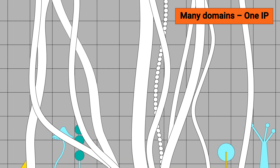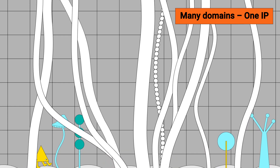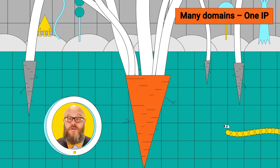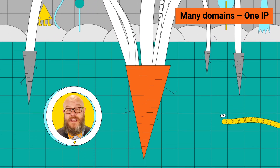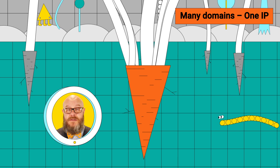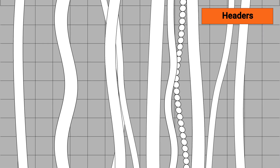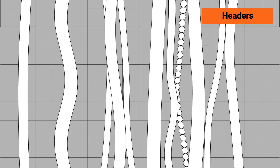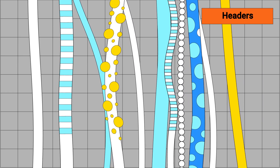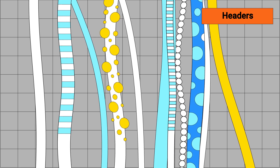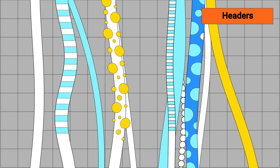Try filtering by IP. Toxic links with different domains can sometimes come from the same IP address. Most likely, the suspicious heading will be part of a bigger group which can be sent to the remove list in one click.